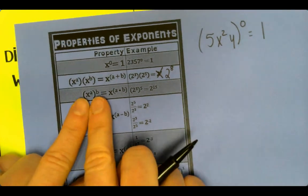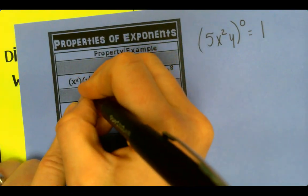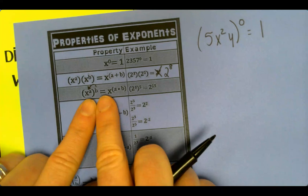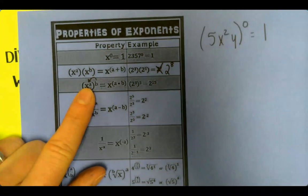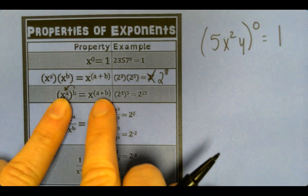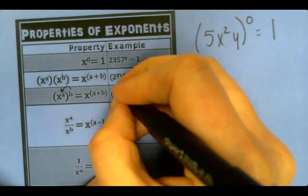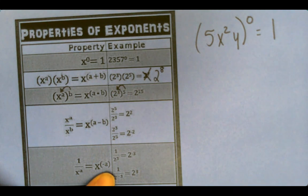If you have an exponent on the outside of the parentheses, we're going to send that exponent in and actually multiply exponents. So show that little arrow there. So it's a times b. In this case, 2 to the 3rd raised to the 5th. You're going to multiply 5 times 3, which is 15.